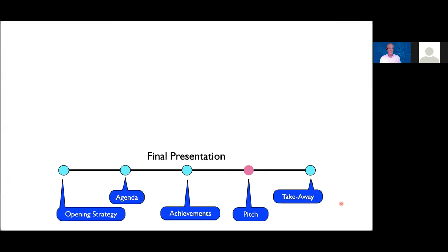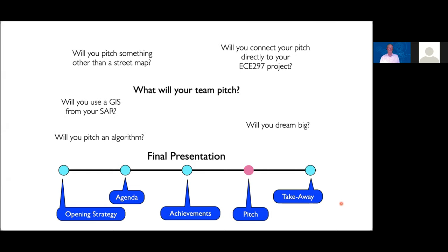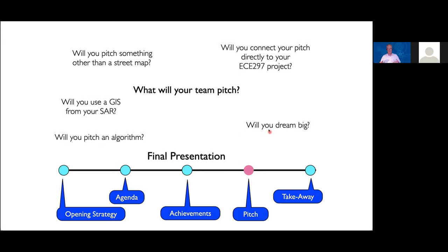Today we'll take a look at the pitch and Q&A. We talked a bit about the pitch yesterday, and you clearly have a lot of different directions you could take. You're deciding whether to connect your pitch directly to the project you've been working on, or whether to pitch something other than a street map. You might go back and consider a GIS from your state-of-the-art review, or pitch an algorithm. Think about how big you want to dream—do you want to go in an entirely new direction? These are decisions your team can make, so there's a lot of latitude here.